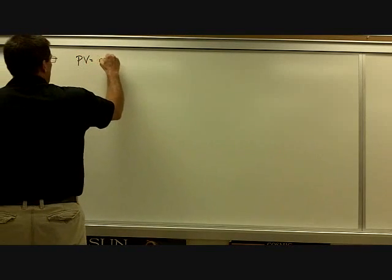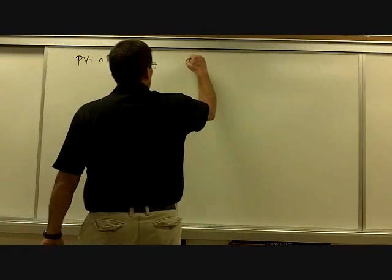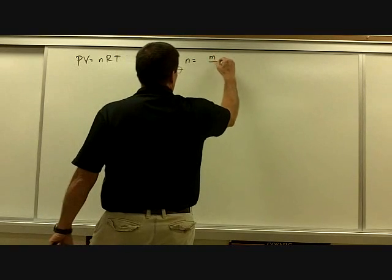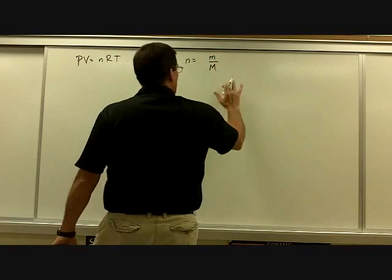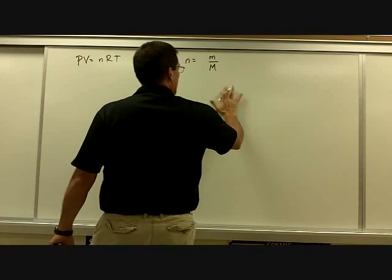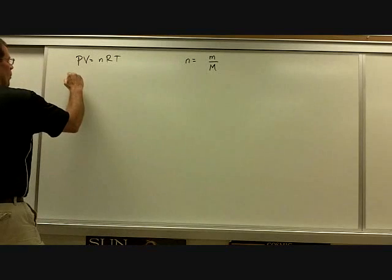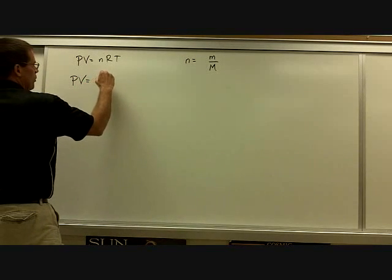So the question is asking for the density. As we talked about yesterday, PV equals nRT. We were also given that little n is equal to little m over big M. So we need to do some substitution.